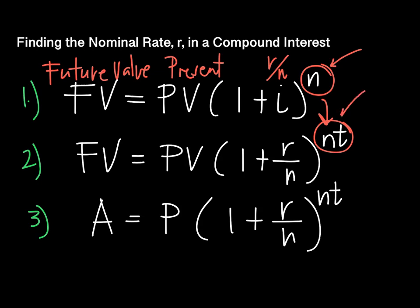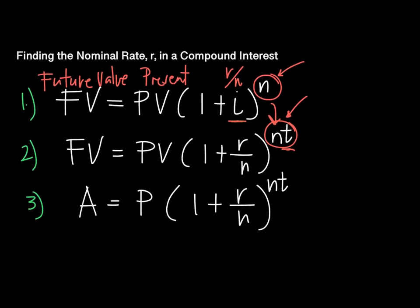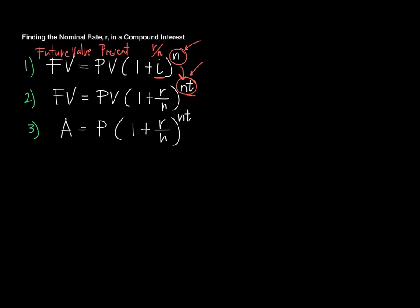What I do is I always remember that the exponent here is the number of periods, and the time here is the number of years. The I is always the annual interest over the number of times the interest is compounded.